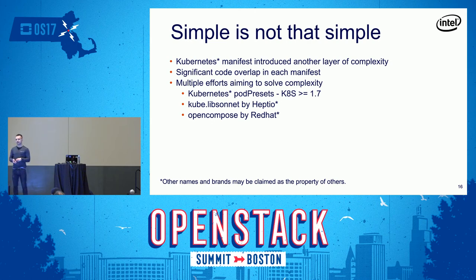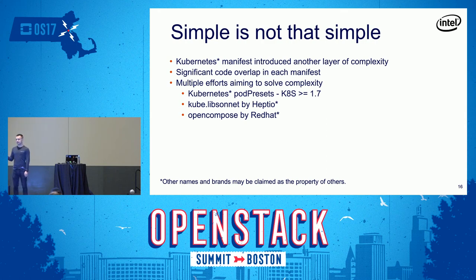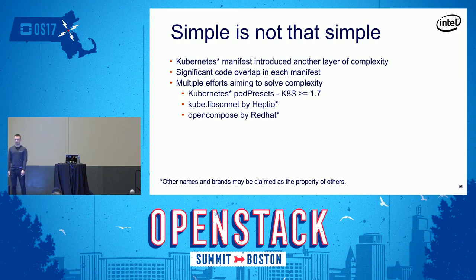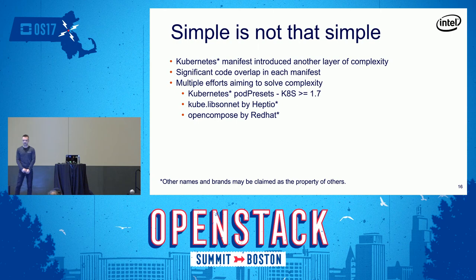There are efforts to fix the code duplication problem. In Kubernetes, pod presets allow you to create a pod preset object and include it in manifests — currently supporting simple statements but expected to grow. There are also separate efforts like creating Kubernetes manifests with Jsonnet, driven by Heptio using their LibSonnet project, which has shown promising results. Red Hat is also trying to address this with their Open Compose project.